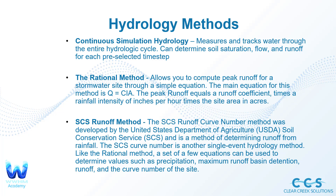The rational method allows you to compute peak runoff for a stormwater site through very simple equations. The main equation is Q = CIA, where peak runoff equals a runoff coefficient times rainfall intensity in inches per hour times the site area in acres. This is a very simplistic method but can give you a quick runoff estimate. Then we have the SCS runoff curve number method, developed by the USDA and the Soil Conservation Service — another method for determining runoff from rainfall using soil curves and precipitation data.